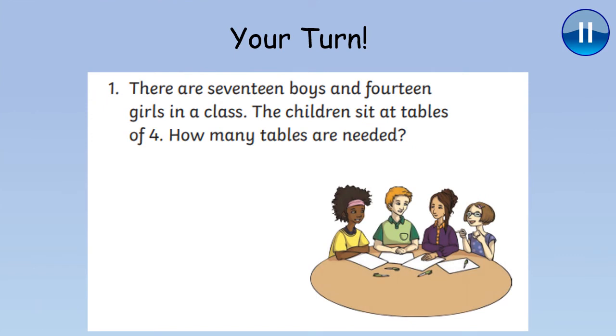Now it's your turn. For each of the following questions, you will need to do different calculations before you reach your final answer. Work out which calculations you need to do and in what order first. And then check your answers carefully at the end. Question 1. There are 17 boys and 14 girls in a class. The children sit at tables of 4. How many tables are needed?